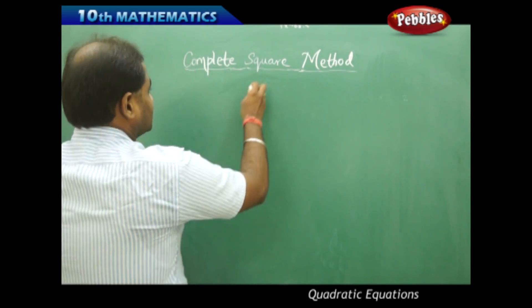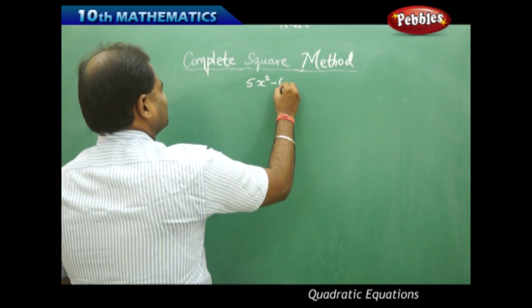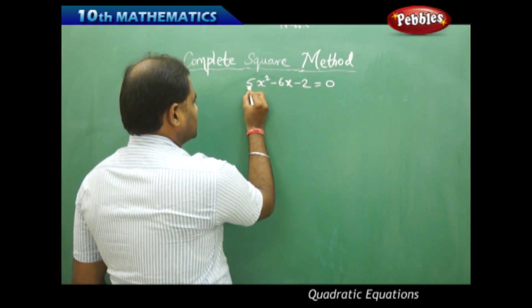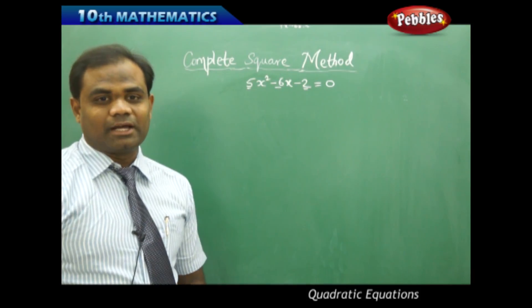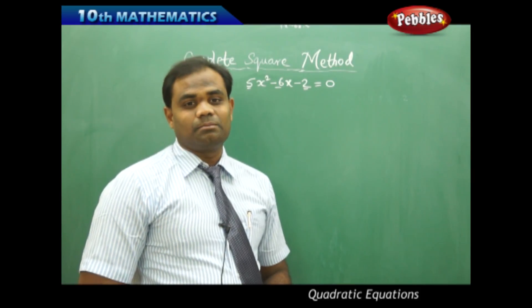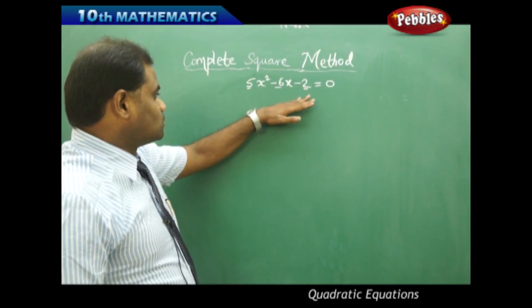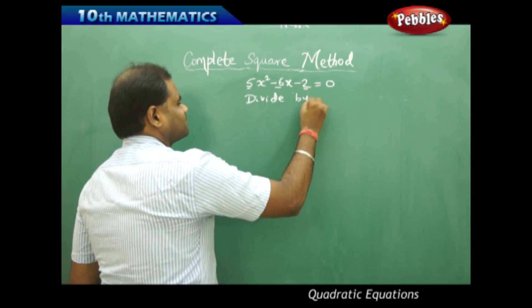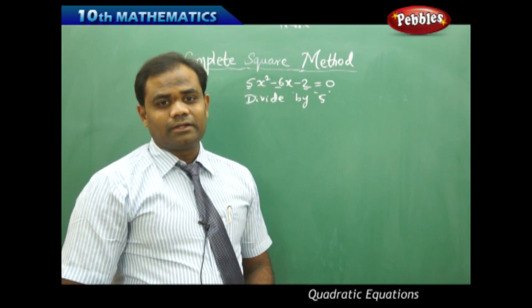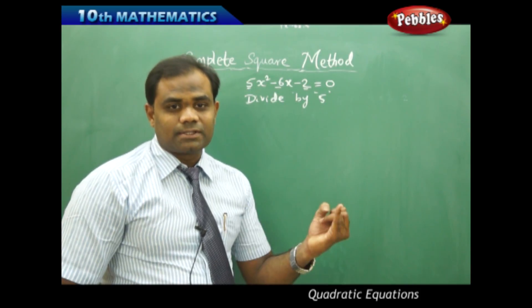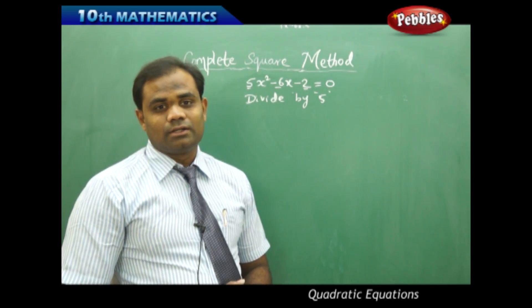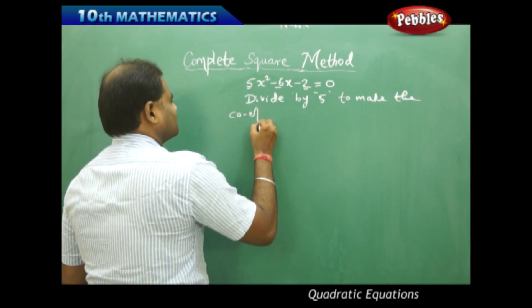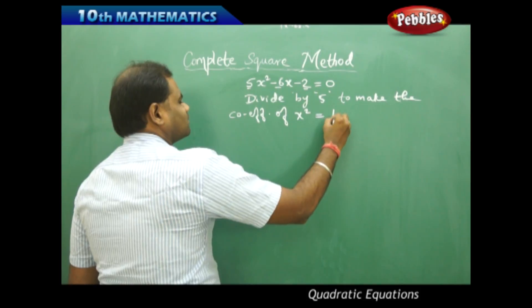Let me take the quadratic equation 5x squared minus 6x minus 2 equal to 0. The coefficient of x squared is 5, the coefficient of x is minus 6, and the constant term is minus 2. To solve this using the complete square method, the first step is to divide the whole equation by 5, because step one requires making the coefficient of x squared equal to 1.